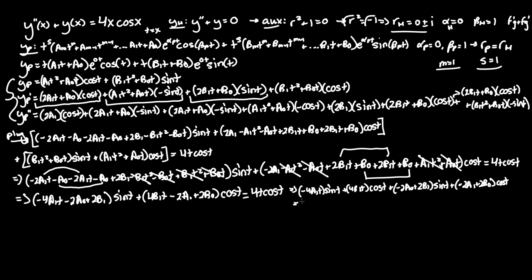So the final particular solution is y_p = t·cos(t) + t²·sin(t). For these types of problems, variation of parameters or Laplace transforms would also work and yield the same solution.